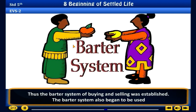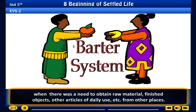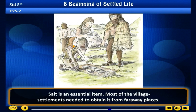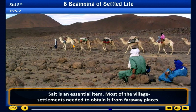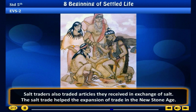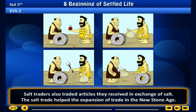The barter system also began to be used when there was a need to obtain raw material, finished objects, and other articles of daily use from other places. Salt is an essential item. Most of the village settlements needed to obtain it from far away places. Salt traders also traded articles and received salt in exchange. The salt trade helped the expansion of trade in the new stone age.